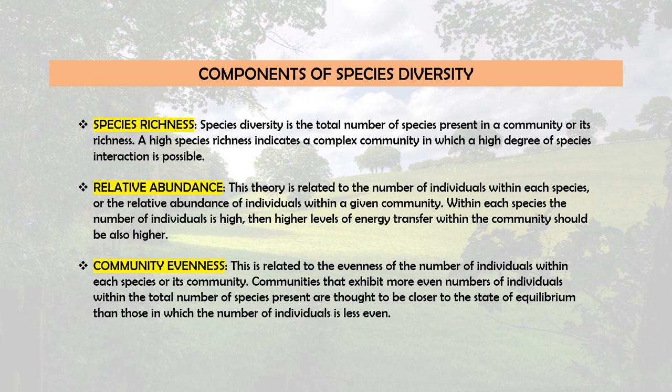The first component is species richness — the total number of species present in a community. High species richness indicates a complex community in which a high degree of species interaction is possible. If there are high species interactions such as predation and competition, there will be high levels of energy transfer, which indicates high species richness.